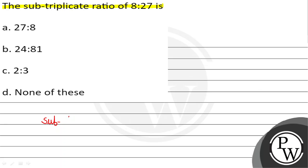We know that sub-triplicate ratio of two numbers A:B is equal to cube root of A : cube root of B. A का cube root is to B का cube root.